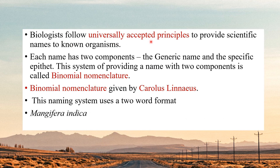Biologists universally follow accepted principles to provide scientific names to organisms. Each name in binomial nomenclature has two components: the generic name and the specific epithet. This system of providing a name with two components is known as Binomial Nomenclature. One question you can count on appearing in the NEET exam: Binomial Nomenclature was given by Carolus Linnaeus — mark that down.